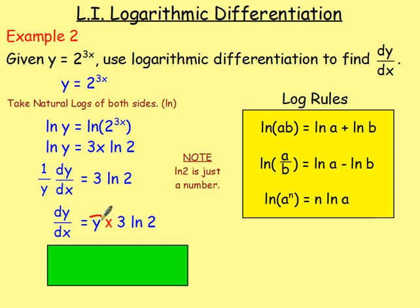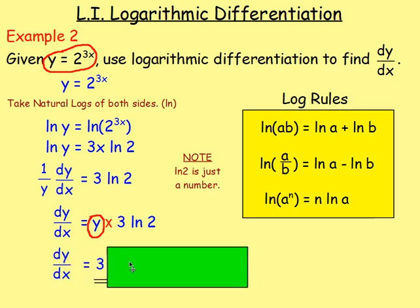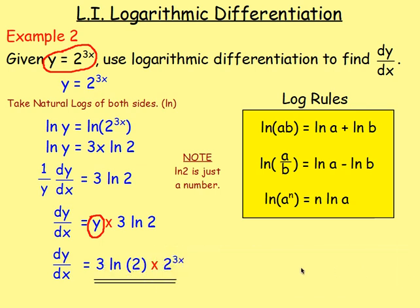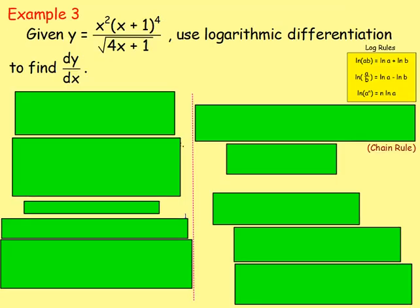We want the answer in terms of x, so replace y with what it equals from the question: y = 2^(3x). Therefore dy/dx = 3·ln(2) · 2^(3x). That is your answer for example two.